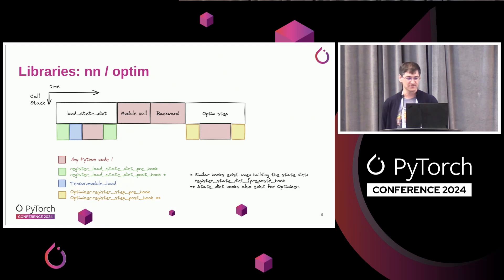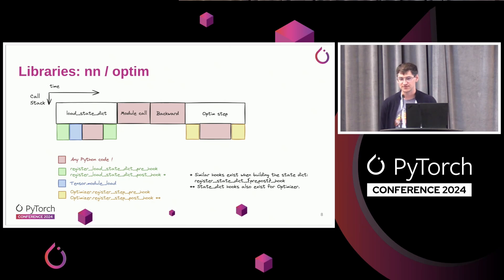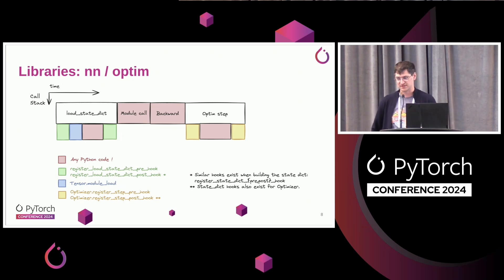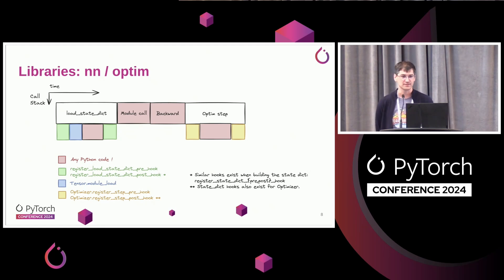Looking at just the load state dict call — did you know there are already three hooks in there? You can Google the exact API names shown to find the documentation. In load state dict, we have a pre and post hook — one that happens before, one after. If you need any preprocessing or post-processing on your state dict or module after loading, you can use that. And there's a new one: module load on the tensor object, so if you use subclass or these new extension points, you can have custom behavior when a new weight is loaded — for example, when using NF4 or float8 tensors.